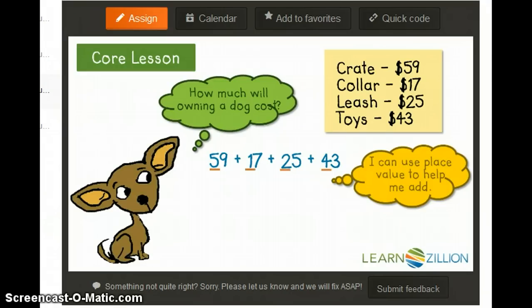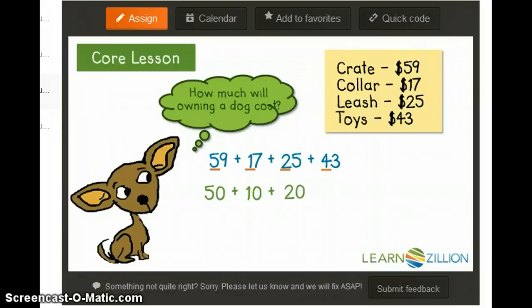I can use place value to help me add bigger numbers. I can first look at the tens and add 50 plus 10 plus 20 plus 40. If I rearrange the addends, I can see that I can make 50 by adding 10 to 40. I then have 50 plus 50 plus 20. I know that 50 plus 50 equals 100, so I just need to add 20 more to get 120.